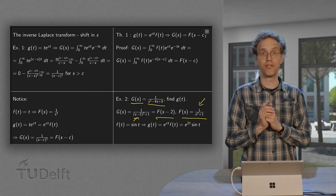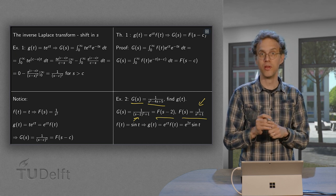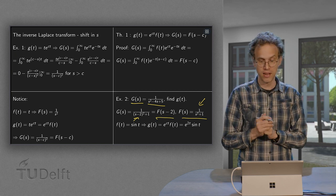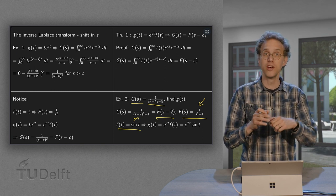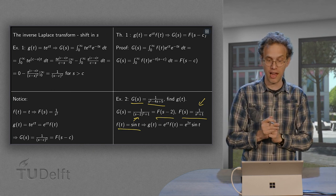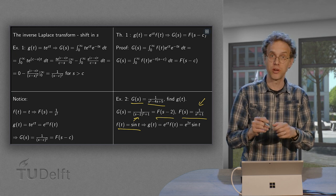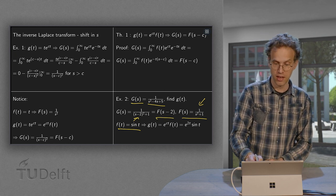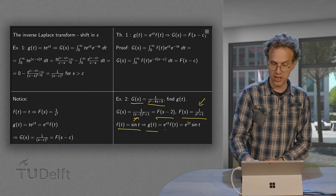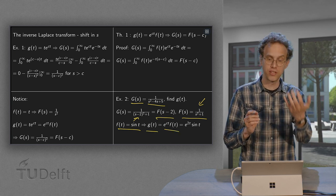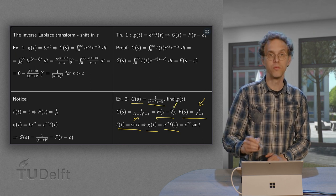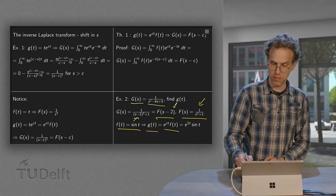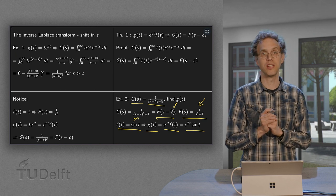And this F(s) is indeed in your table, because if you transform it back, you get F(t), which is sin(t). So this one you know. And because you know F(s), you can also find back your g(t). Your g(t) is then e^(ct)·F(t). F(t) was sin(t). Your c was 2. So your inverse Laplace transform equals e^(2t)·sin(t).